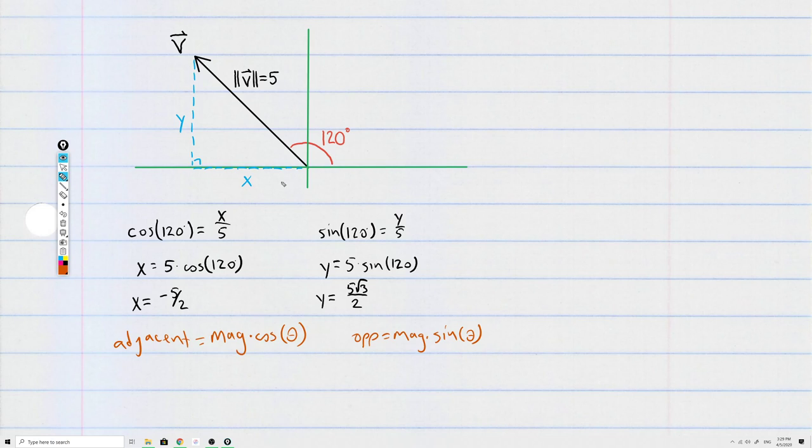So if you already knew this, you go back to the beginning, and if you want to know what x and y are, you just say, well, I know x is 5 times the cosine of 120. I know that y is 5 times the sine of 120.